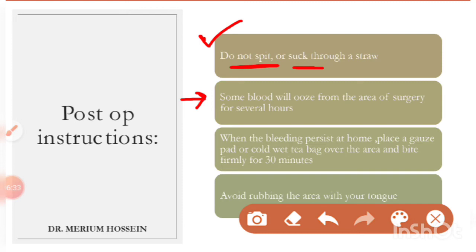If bleeding is a bit heavier at home, the patient can use a piece of gauze for pressure packing or a cold wet tea bag over the area, biting down for 30 minutes. The tannins in the cold wet tea bag help reduce blood leakage. Additionally, the patient must avoid irritating the extraction site with their tongue tip or repeatedly rubbing their tongue in that area.